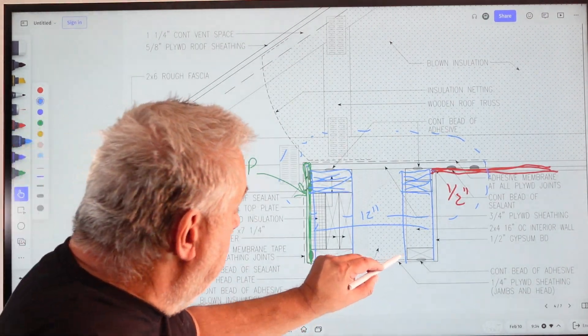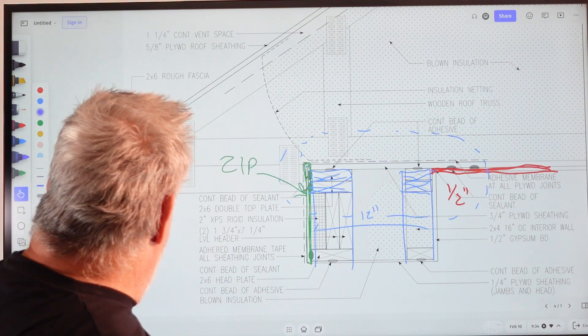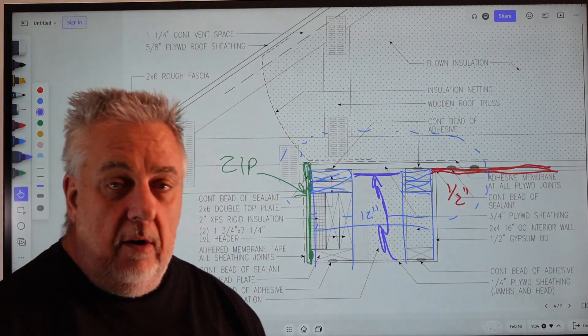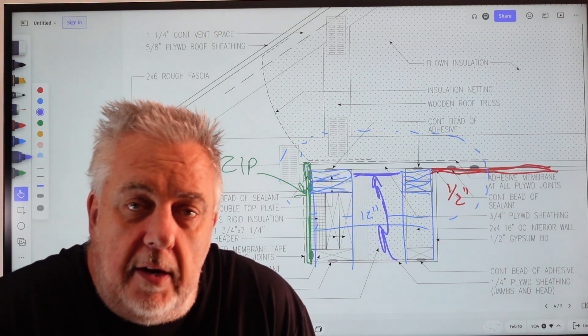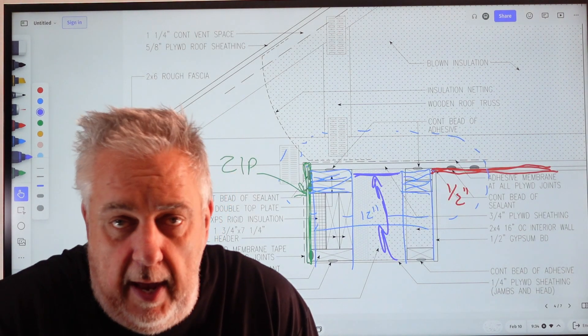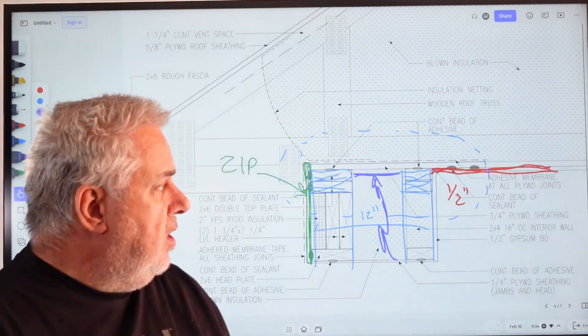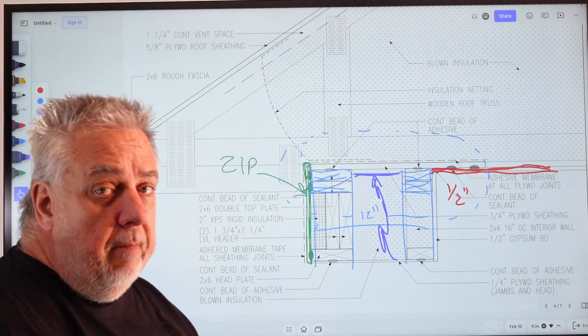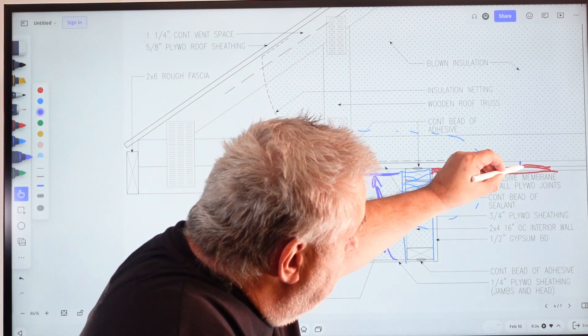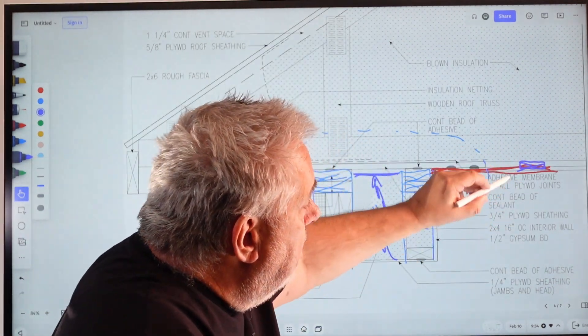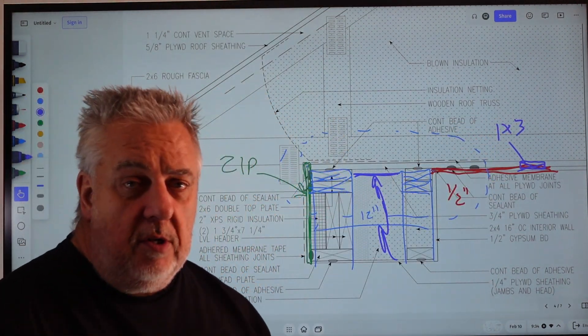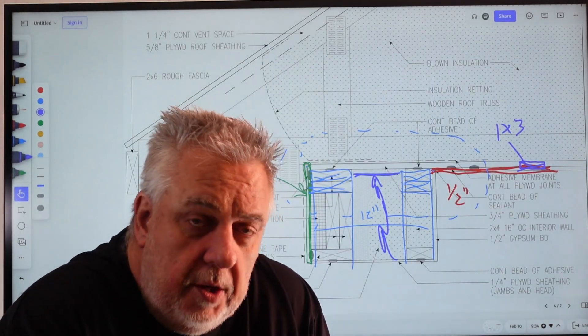So we also needed to provide - if fire gets in here, we need to provide a stop for fire that gets inside that double stud wall cavity, and stop it from connecting to the attic and continuing to burn there. So we know we had to put closure there.